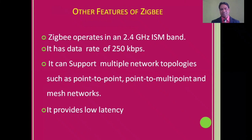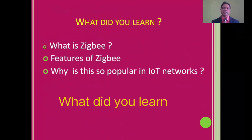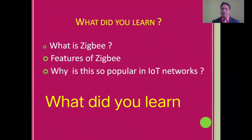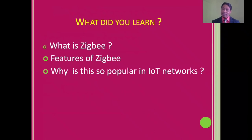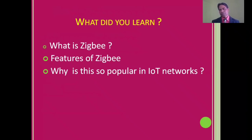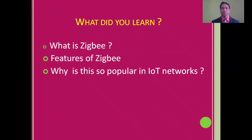In summary, Zigbee is an IoT gateway that transmits data between devices to the cloud. Its key features are that it is low cost, low power, and short range. It is popular because it serves as a replacement for Wi-Fi and Bluetooth in situations where those technologies are not suitable.